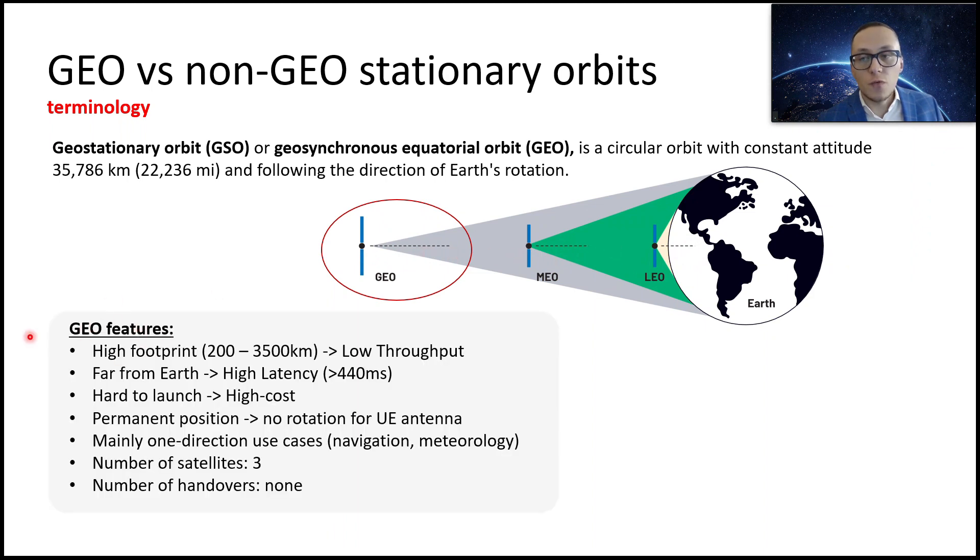There are some features for geosatellites. They have high footprint and that's the reason of low throughput for end users. They are far from the earth, which means they have extreme large latencies. It is pretty hard to launch and high cost because moving satellite to that position is not an easy task. But the positive thing is that they have a permanent position.